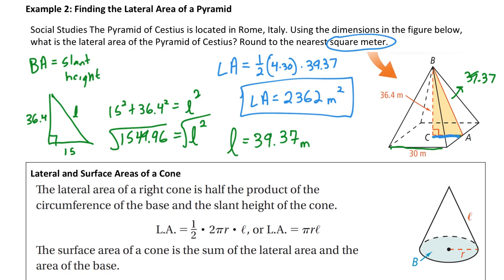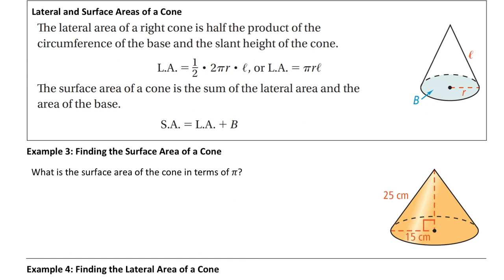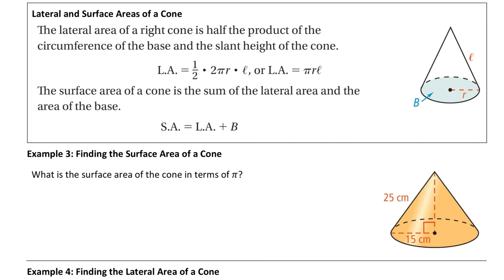Now we'll cover two examples of cones. The lateral area and surface area of cones is really similar to pyramids. For a pyramid it's one half times perimeter times slant height. For a cone, the perimeter of the base is 2πr, so one half times 2πr times l simplifies to just πrl — pi times the radius times the slant height.